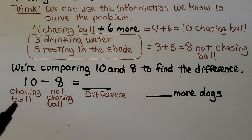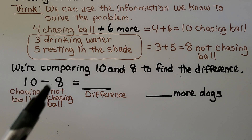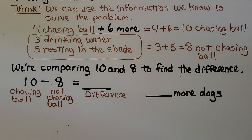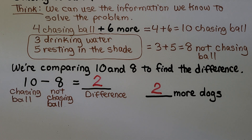There are ten chasing a ball and eight not chasing a ball. To find the difference, we use subtraction. Ten will be our minuend and eight will be our subtrahend. Ten minus eight — if you said two, you're right: eight, nine, ten. We compared the two amounts to find the difference.